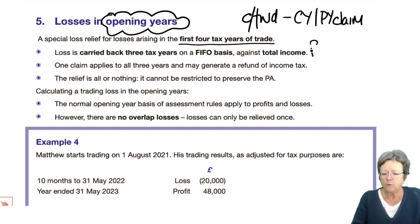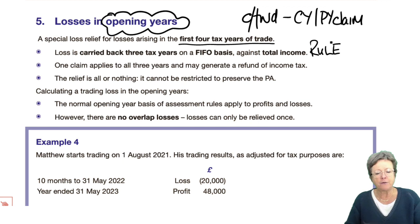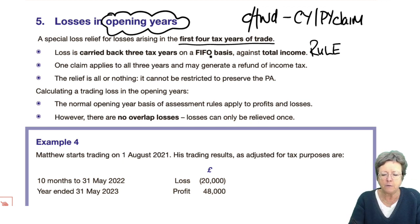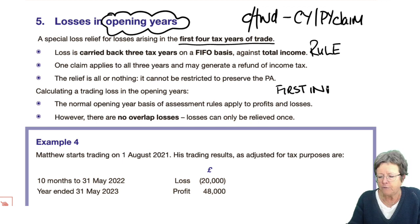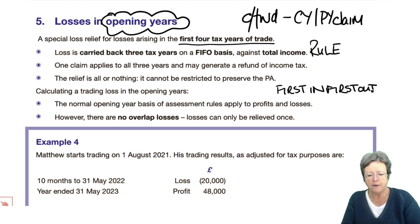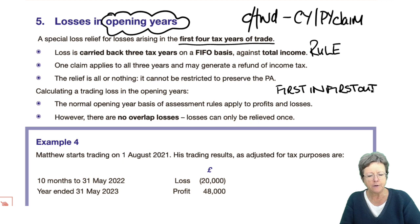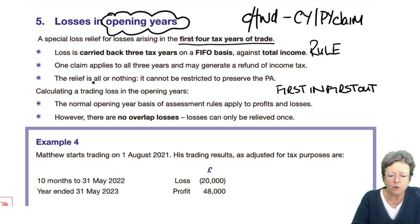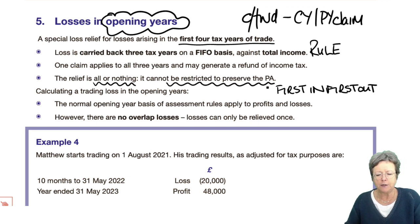The rule is that you can carry back the loss three tax years on a first in, first out basis — FIFO — and it's against total income. One claim applies for all three years. You're likely to get an income tax refund if you've paid tax. Again, it's all or nothing, just as the others were, and it cannot be restricted to preserve the personal allowance.